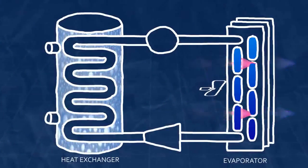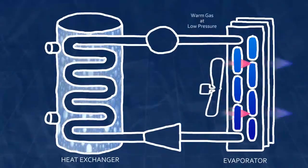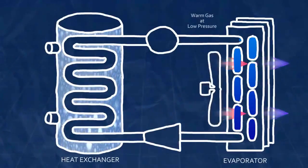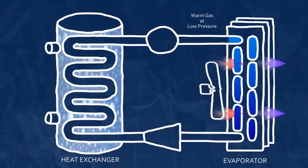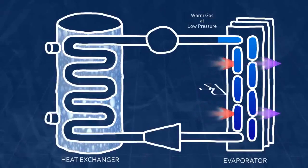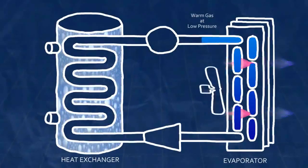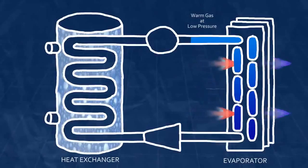Once it's passed through the evaporator, the refrigerant is a warm gas, the cold liquid having been warmed and vaporized by the room air. The refrigerant is still not hot enough to heat water, however, so that's where the compressor comes in.